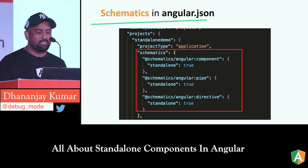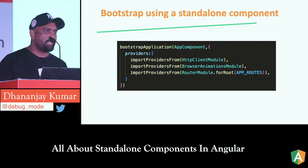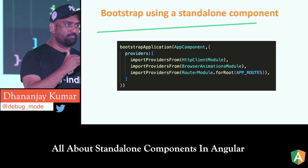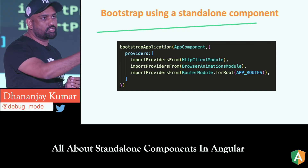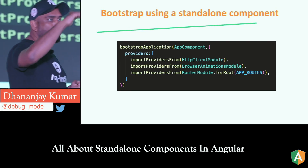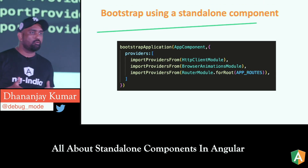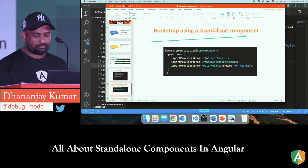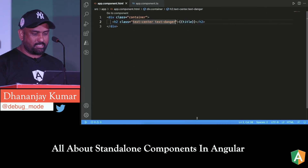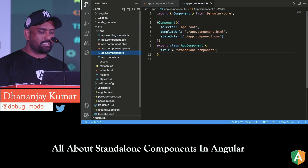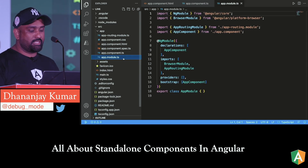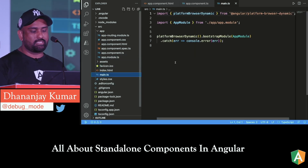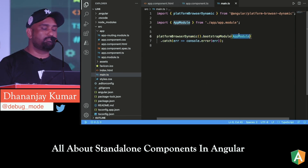Now, how do you bootstrap a standalone application? We've learned that in main.ts we pass the module name, and in the main module we pass the component name in the bootstrap property — that's how the Angular application bootstraps. But now there's no module, so how do you bootstrap? Here I have created an application with a module. In app.module you see 'bootstrap: AppComponent', and in main.ts you pass the syntax that bootstraps through AppModule.